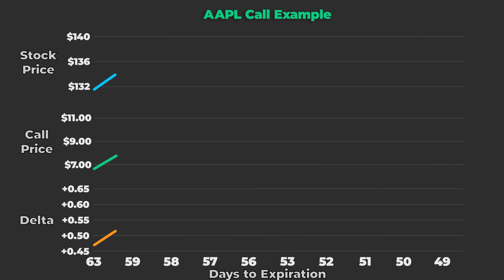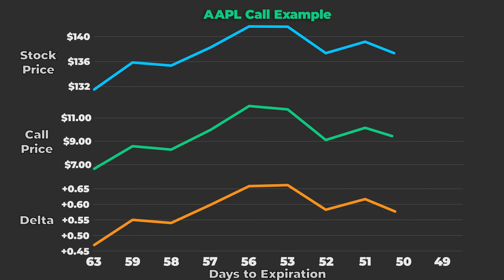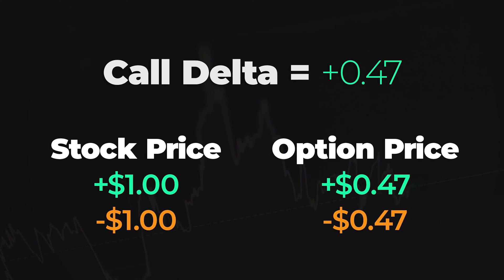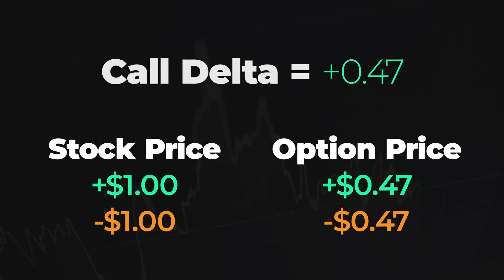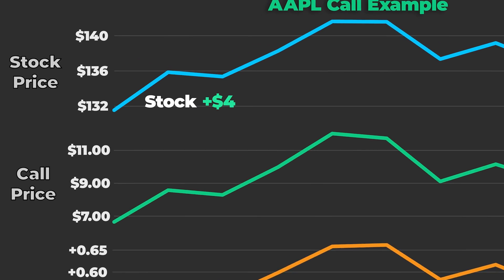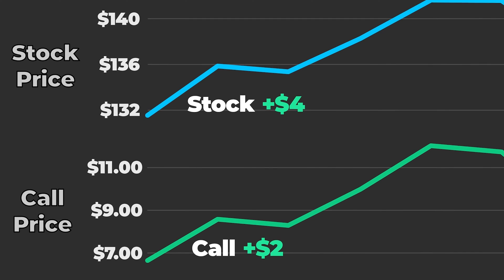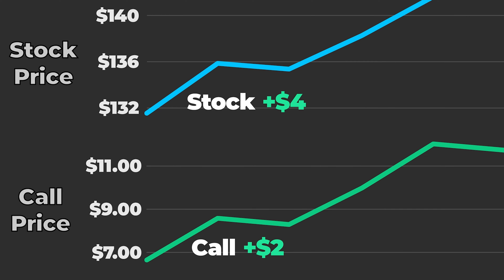Let's look at a real-life example using Apple data. In this Apple call chart, note the relationship between the stock price, the price of the $135 call, and the call's Delta. Initially, the call's Delta was approximately 0.47, suggesting the call's price would change by about $0.47 for each $1 change in the stock price. When Apple shares rose from $132 to $136, an increase of $4, the call's price climbed from around $7 to $9, a $2 increase, consistent with that positive 0.47 Delta.